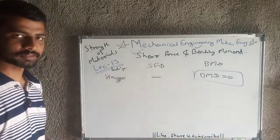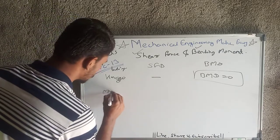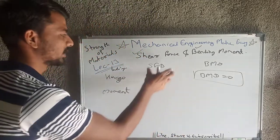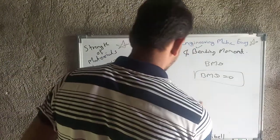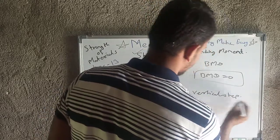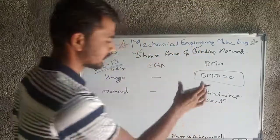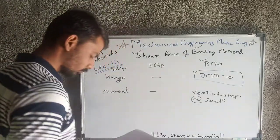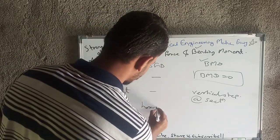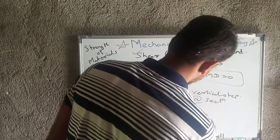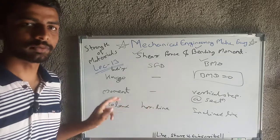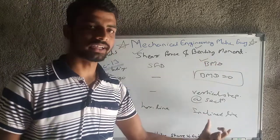If there is a bending couple — that is, a concentrated moment — the shear force will not vary, because there is only a moment and no transverse force. In the bending moment diagram, there will be a direct vertical step at that section. If there is no load at all, the shear force diagram will show a horizontal line, and the bending moment diagram will show an inclined line.